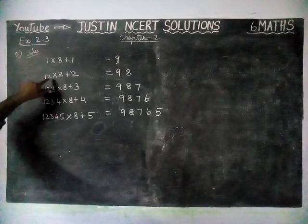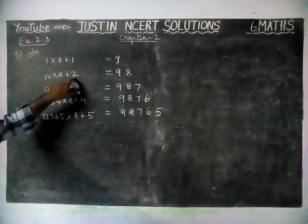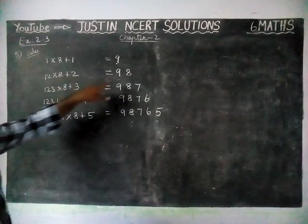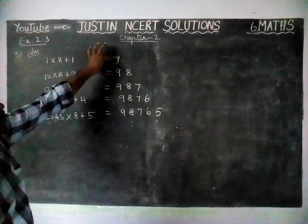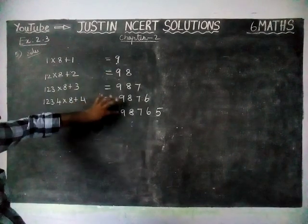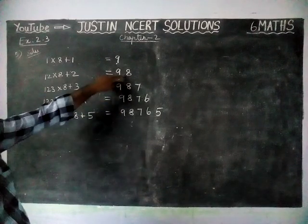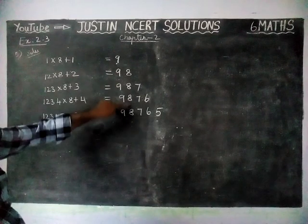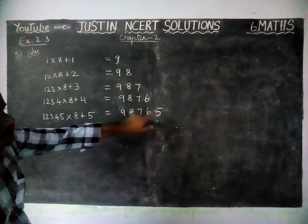The next number has 2 in the ones place, and we are adding 2 to get 98. This digit 9 is continuously repeating — 9, 9, 9 — and here the second digit is going 8, 7, 6, 5.